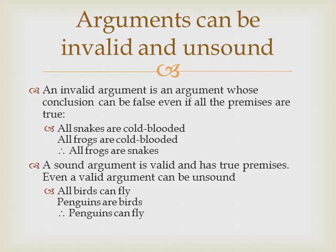A sound argument is a valid argument that has true premises. But even a valid argument can be unsound. For example, if we say all birds can fly — well, that's a false statement. Penguins are birds — that's a true statement. But if we try to use those two premises to support the conclusion that penguins can fly, we have made an unsound argument. It's a valid argument because if all birds could fly and penguins are birds, then penguins would be able to fly. But in reality, penguins can't fly because not all birds can fly.